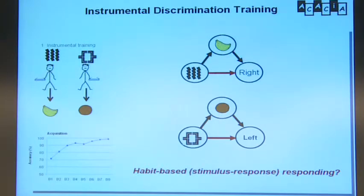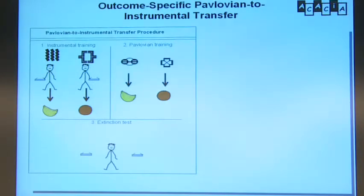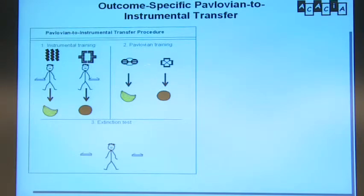For example, you walk into a room every day and just hit the light switch because you want the light to come on. One day you go in during the middle of the day and hit the light switch — you didn't want the light on, it wasn't goal-based, you simply always hit the switch. That's stimulus-response rather than outcome responding. To identify outcome responding, there is a phenomenon called outcome-specific Pavlovian instrumental transfer, where you teach instrumental responding and then do Pavlovian training where they simply see a symbol and get the reward, with no action required.